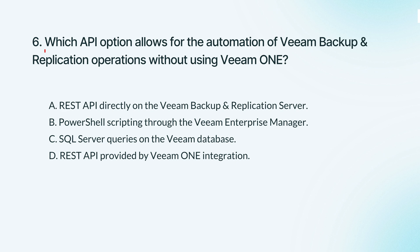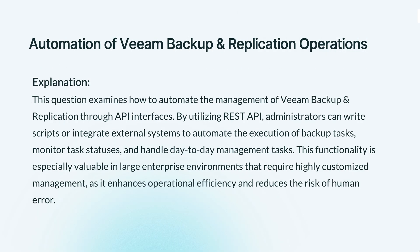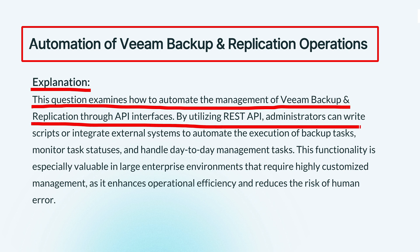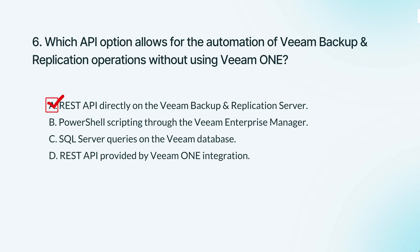Question 6. Which API option allows for the automation of Veeam Backup Replication operations without using Veeam ONE? The knowledge points of this question are automation of Veeam Backup Replication operations. This is about using Veeam's REST API to automate backup tasks, making managing backups more efficient, especially in large environments where doing everything manually isn't practical. The correct answer is: you can use Veeam's REST API to automate backup tasks directly, making it efficient to manage backups without needing extra tools.